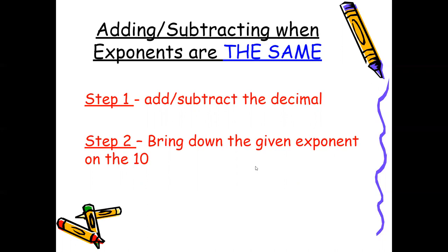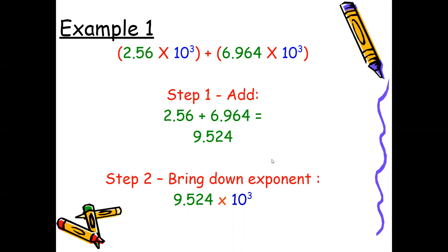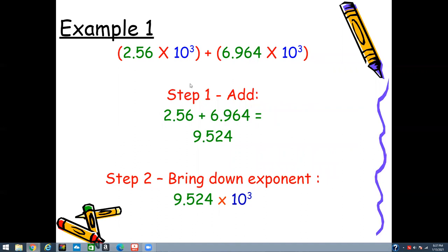Here's our first example: 2.56 times 10 to the third power plus 6.964 times 10 to the third power. First, I look at my base and exponent — the exponents are the same, so I can proceed. My operation is addition, so step one: I'm going to add 2.56 plus 6.964.